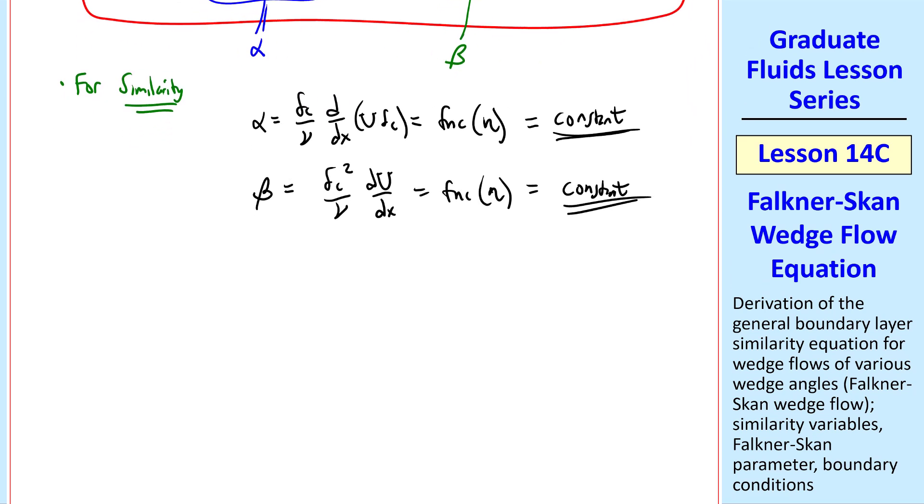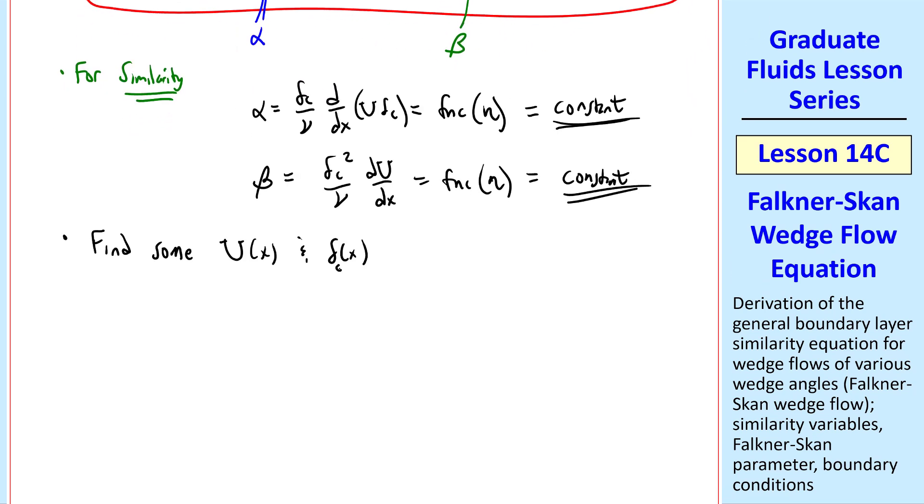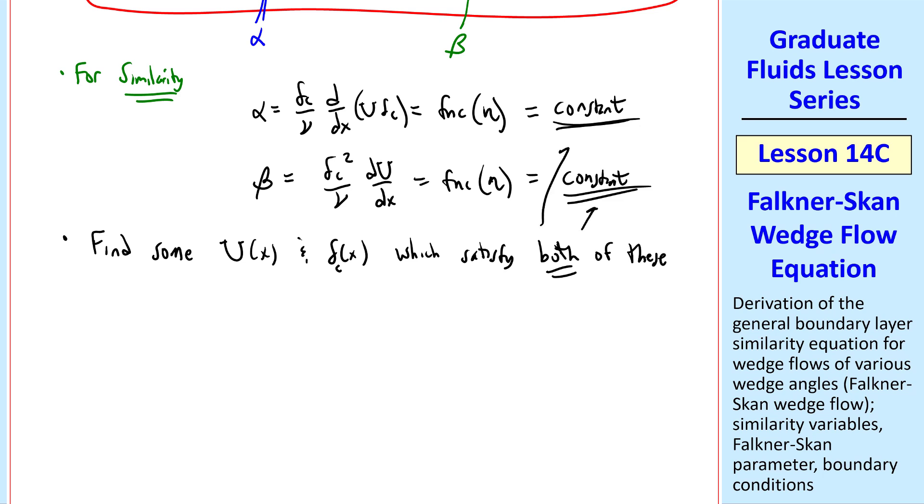So now our job is to find some U and delta c's which satisfy both of these requirements. Well, Falkner and Skan realized this and tried simple power law functions. Namely, delta c of x is some constant c, x to the b, and U of x equal capital B, x to the m, where c, b, B, and m are all constants.